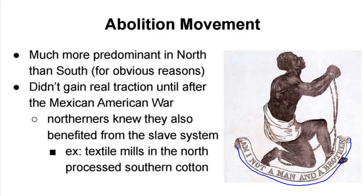The widespread use of Eli Whitney's cotton gin hadn't fully taken hold in the earlier 1800s, so the expansion of slavery wasn't nearly as big or as controversial an issue until after the Mexican-American War and the debates around the Compromise of 1850. Northerners knew they benefited from the slave system as well. Sometimes northerners didn't like the idea of abolition but were quiet about it because they were economically benefiting — for example, textile mills in the North processing Southern cotton produced by slave labor.